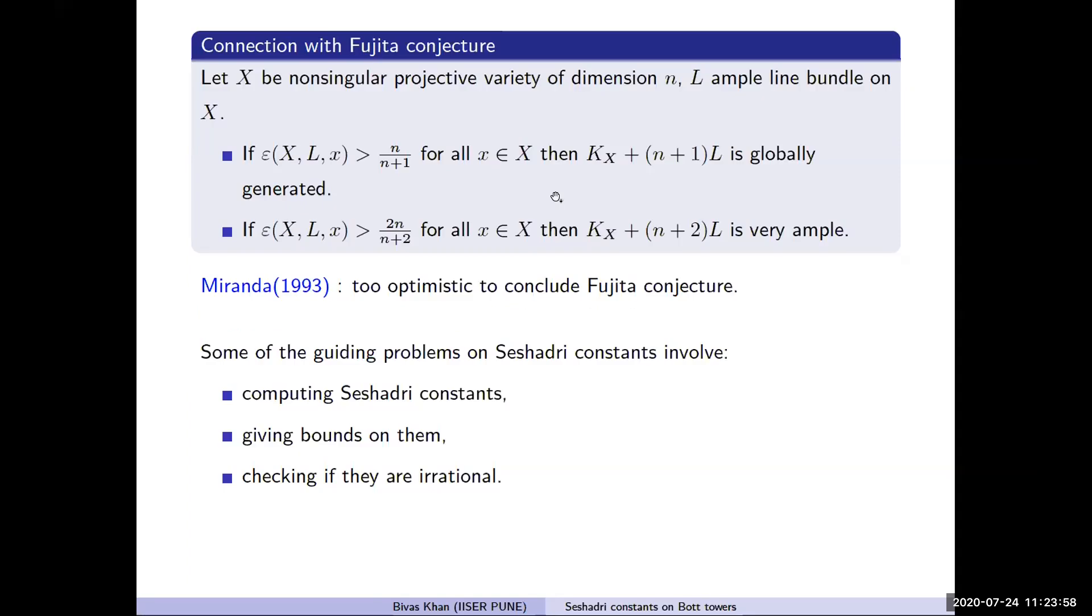But soon Miranda showed that this approach will not be helpful to conclude Fujita conjecture, as Seshadri constants can be arbitrarily small. So this means that in the first place this condition may not be satisfied. Nevertheless, it soon became clear that Seshadri constants are interesting invariants to study in their own right. Now the research on Seshadri constants involves computing them for a given variety at any point, but it turns out to be a very difficult problem. The next best thing is to give as good bounds as possible for them, and another interesting thing is to check if they are rational.